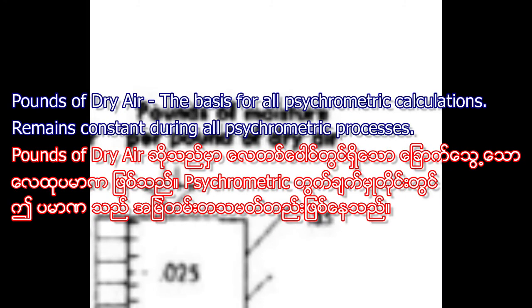A pound of dry air is the basis for all psychrometric calculations and remains constant during all psychrometric processes.